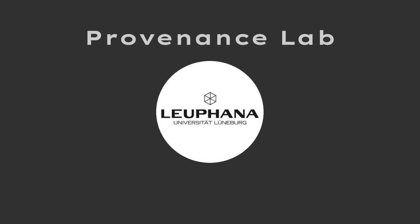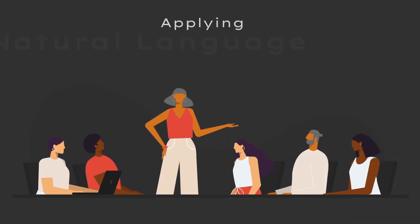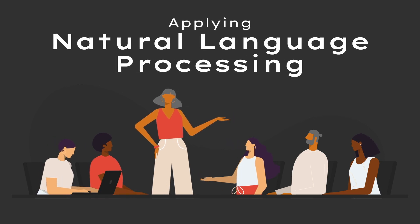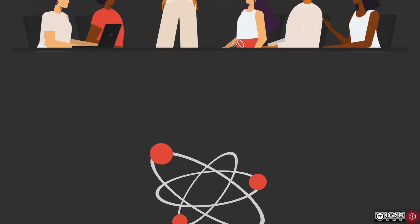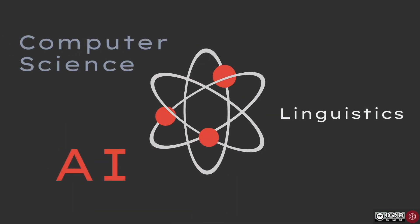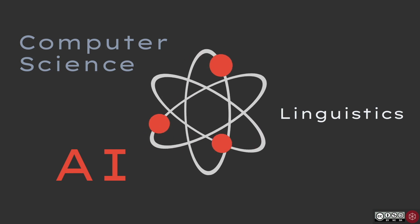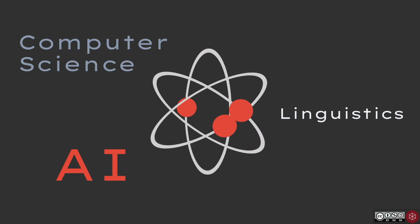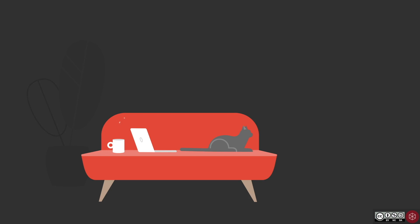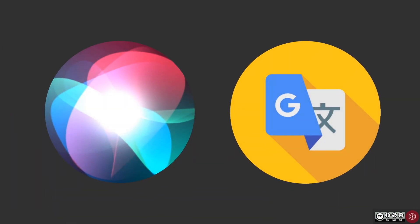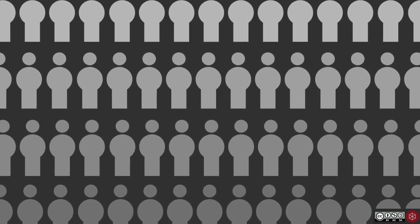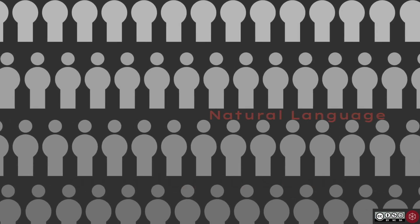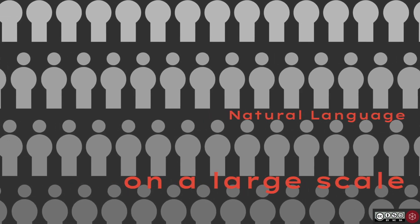Welcome to the Provenance Lab and this tutorial on applying natural language processing. Natural language processing, or NLP for short, is an area of research that lies at the intersection of computer science, linguistics, and more recently artificial intelligence. It is an area of research that nevertheless pervades our everyday life, from applications like Siri to Google Translate.